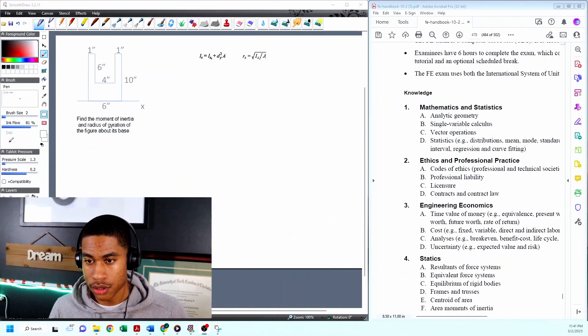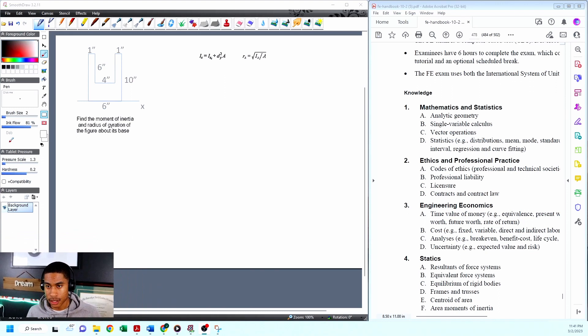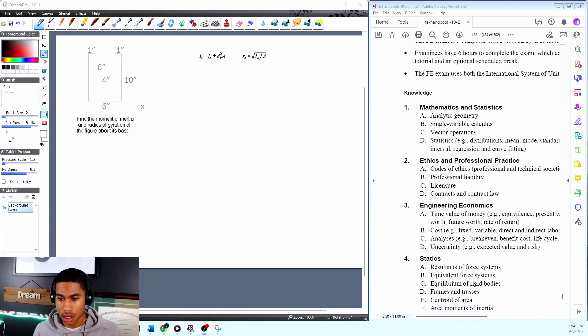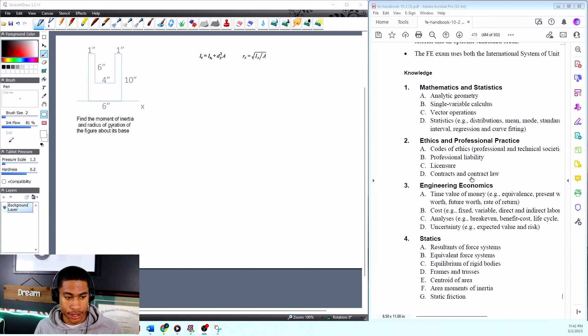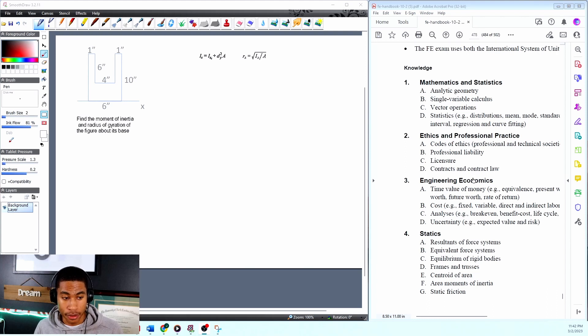I'm going to minimize myself and let's take a look at our practice problem. The practice problem says find the moment of inertia and radius of gyration of the figure about its base. First of all, I want to let you all know exactly what we're covering in statics.